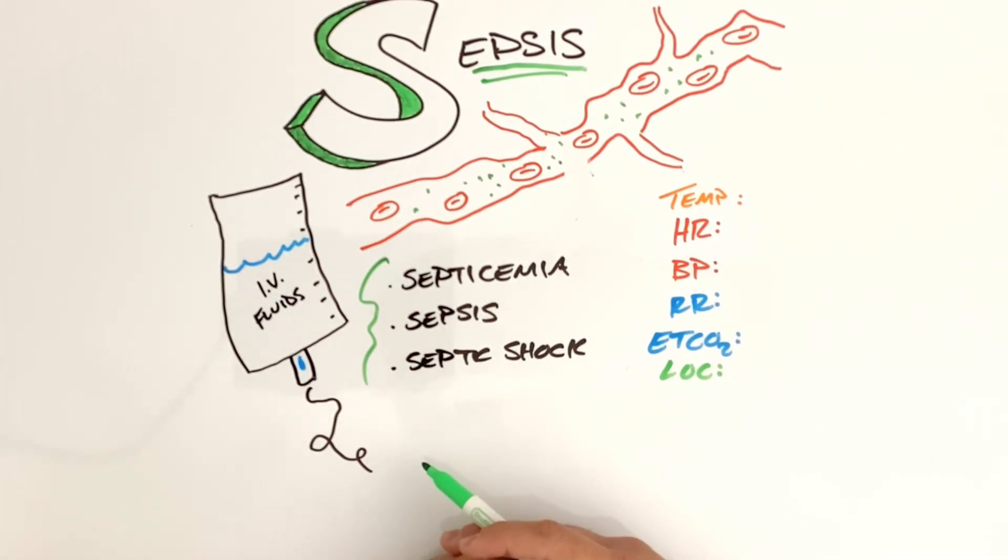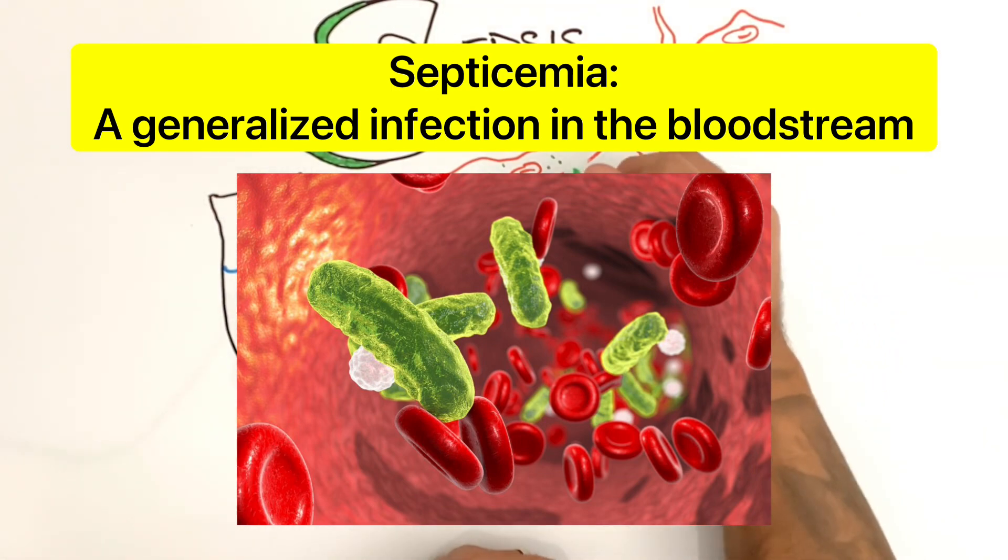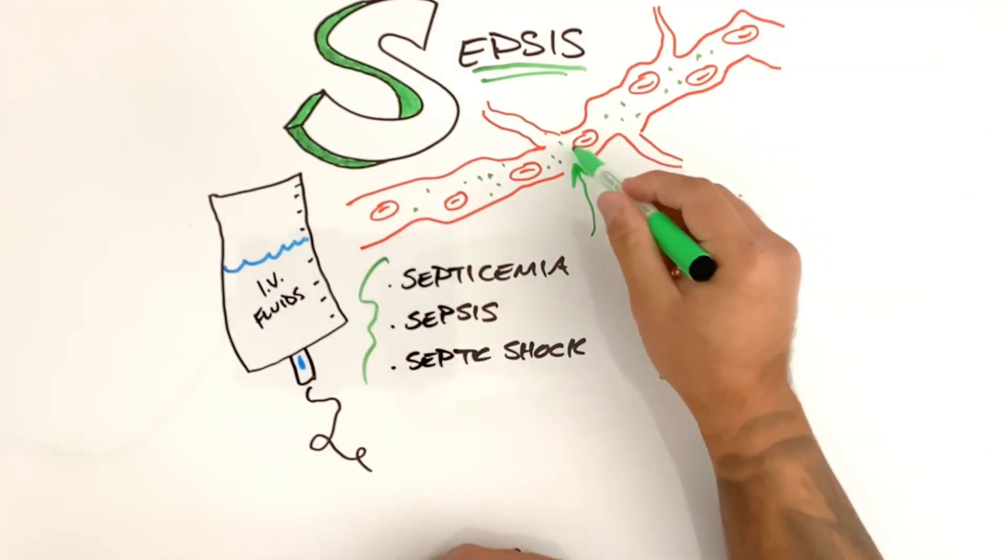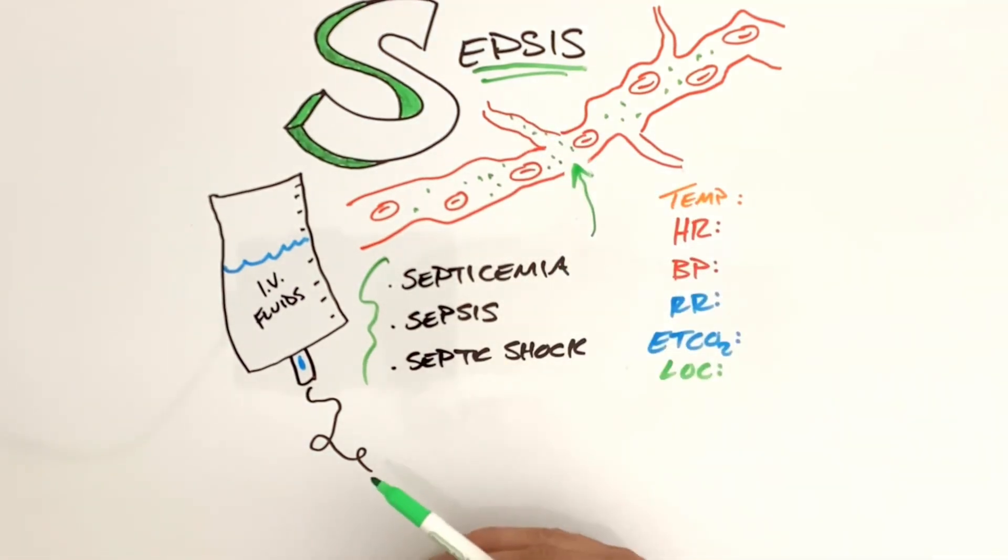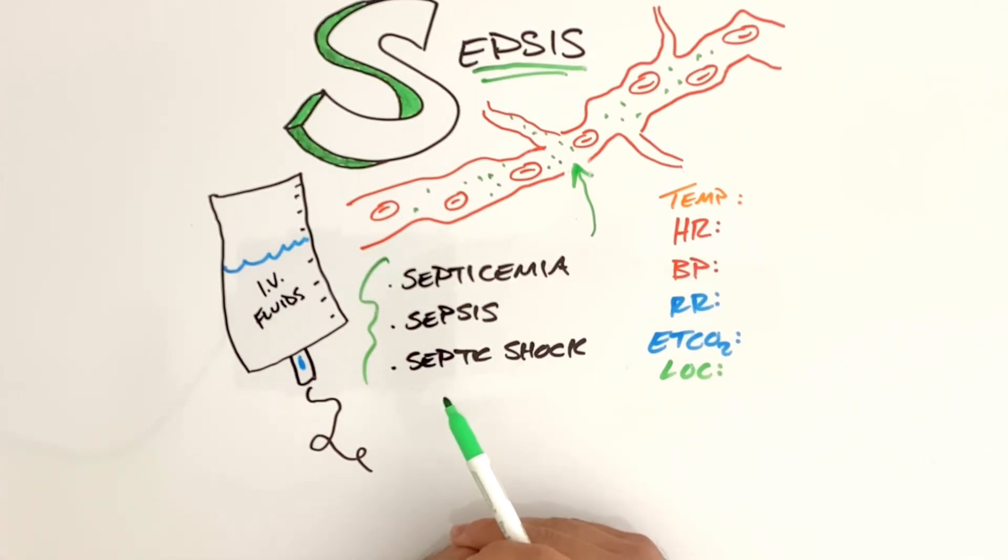So what is septicemia? Septicemia is a generalized infection in the bloodstream. These are microorganisms that through infection make their way into your bloodstream. People also call this blood poisoning. Anytime you have a byproduct of a microorganism, anything bad in your bloodstream, it's going to cause dysfunction to your tissues and cells and organs, and your body is going to react to it. So we want to identify this and get these patients help as quickly as possible.